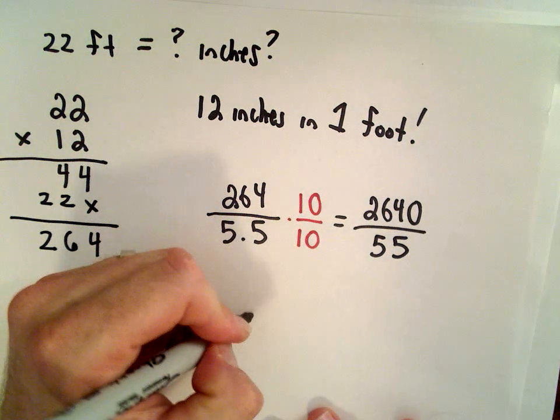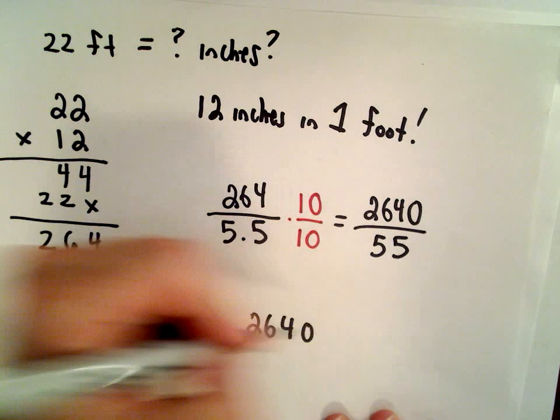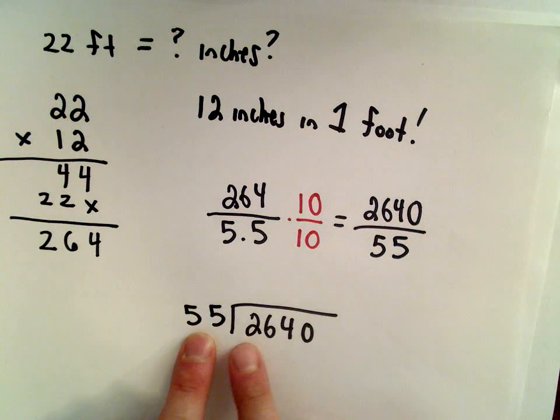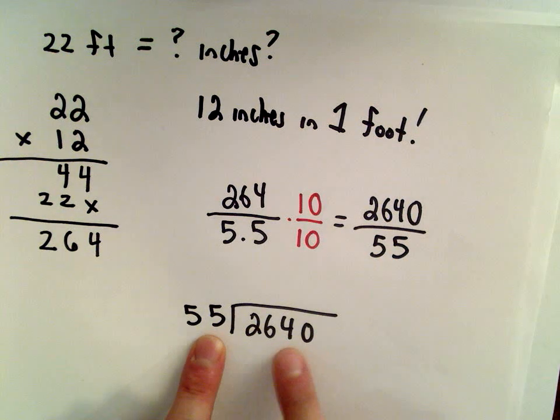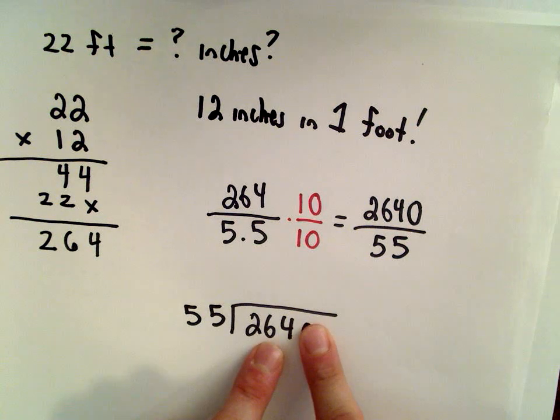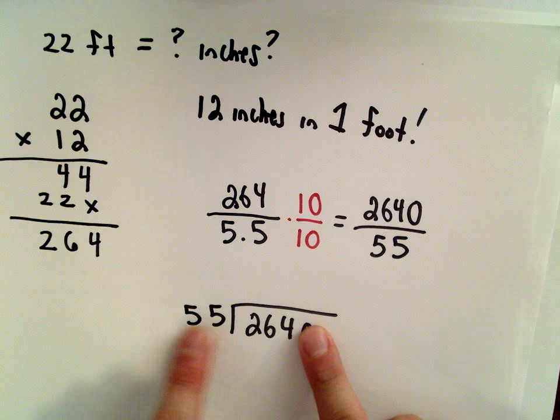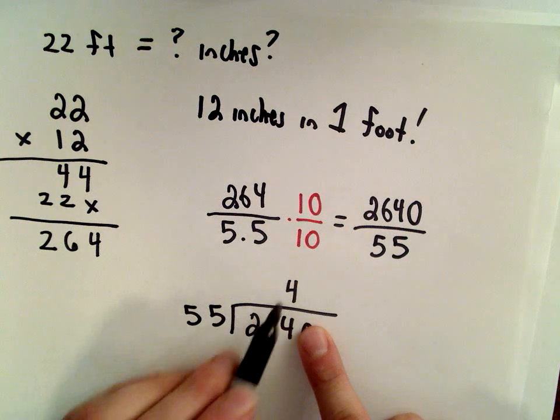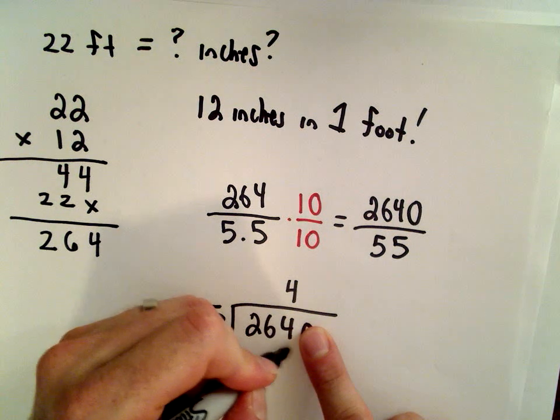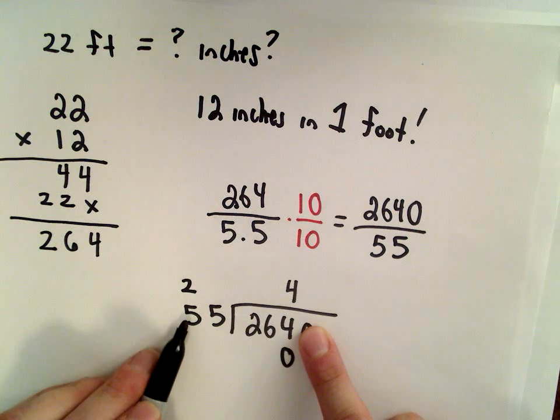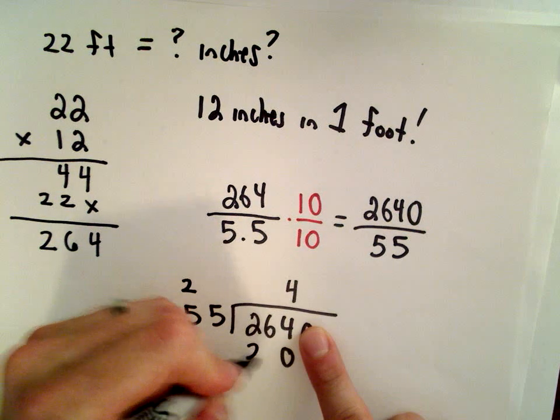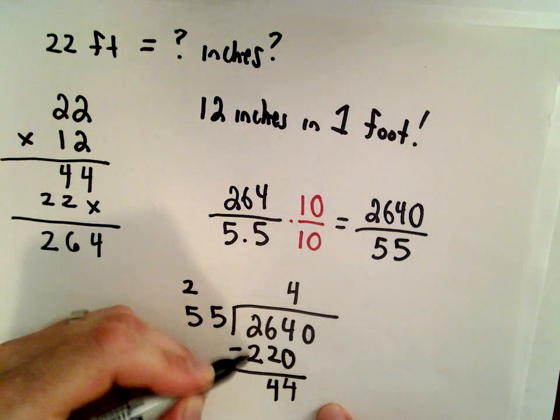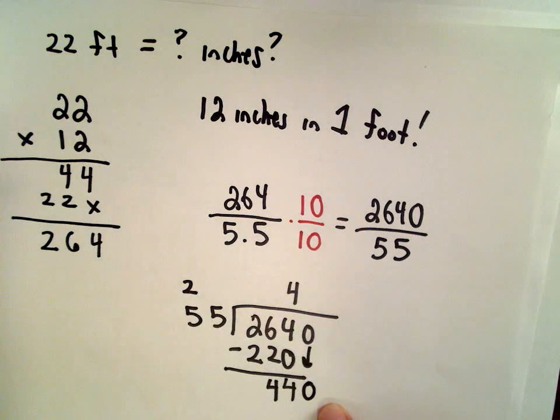Now you start doing long division. So 2640 divided by 55. 55 doesn't go into 2, 55 won't go into 26, it will go into 264. How many times does it do it? It's probably like 4 or 5 times, so let's guess 4 and see if that works. So 4 times 5 is 20, so I'm going to drop down to 0 and carry the 2. 4 times 5 again is 20, 20 plus 2 is 22. I'm going to subtract - 4 minus 0 is 4, 6 minus 2 is 4, 2 minus 2 is 0. I'm going to drop down the extra 0.